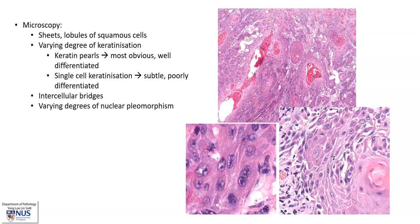Microscopically — and there is a separate video on this — there will be sheets and lobules of malignant squamous cells showing varying degrees of keratinization. We can see some keratin pearls here, and also sometimes single-cell keratinization. The presence of intercellular bridges are features of squamous differentiation, and we may also see varying degrees of nuclear pleomorphism.